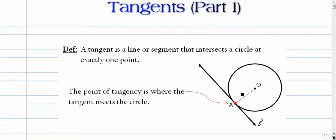First, let's define a tangent. A tangent is a line or a segment that intersects a circle at one point, and one point only. So it doesn't go through the circle, it just touches at that one point, which is called the point of tangency. In this case, it's point A. So line L is tangent to circle O at point A.